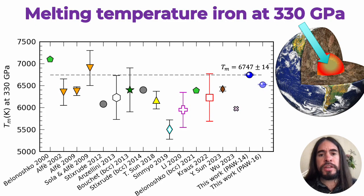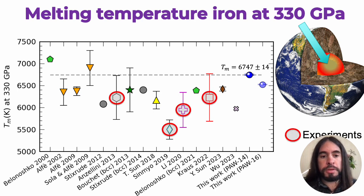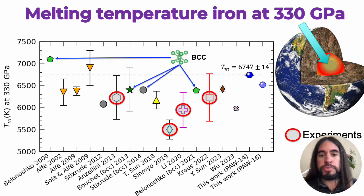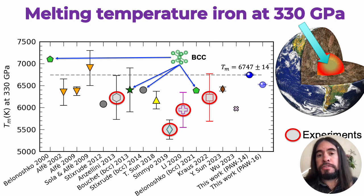Our study is motivated by the apparent discrepancy in the melting temperature of iron at the pressure relevant to the inner core boundary of the Earth at 330 gigapascals. There are many experiments that pinpoint two different melting temperatures at the same pressure, and there is a lot of scatter among the predictions of different simulations as well. Some of them have been produced using the BCC phase of iron, which is not the most commonly considered stable phase — we believe that to be HCP. Different phases will have different melting temperatures in principle, so it's really hard to understand the discrepancy in the literature.